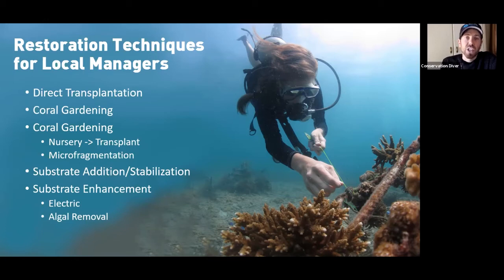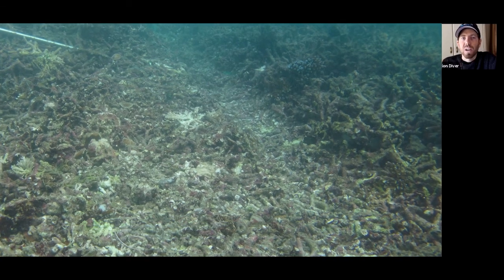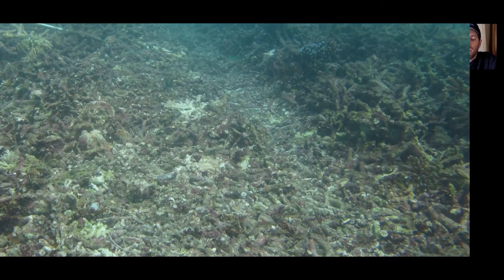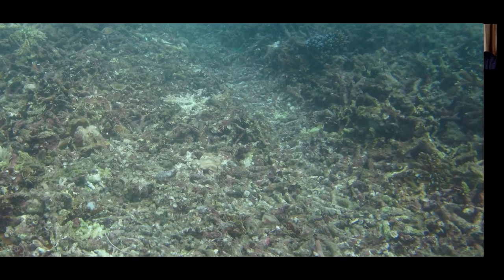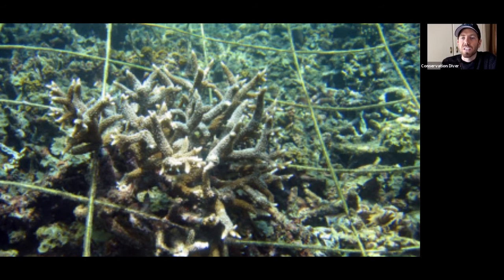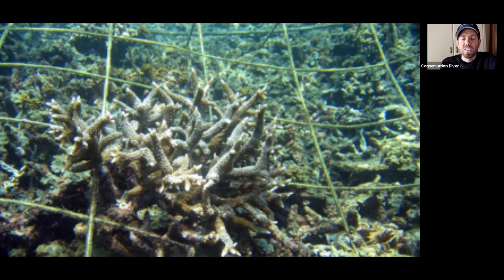Next we have substrate addition — artificial reefs or stabilization. This is for when we have rubble fields where branching corals break apart into unstable rubble. Sometimes we use nets, concrete, or adhesives to stabilize that rubble.